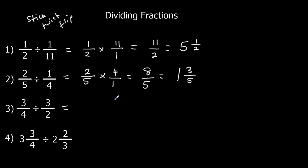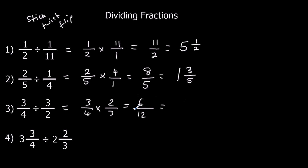3 quarters divided by 2 thirds — flip to 3 quarters times 3 over 2. 2 times 3 is 6, and 4 times 3 is 12. They're both in the 6 times table — 1 six and 2 sixes — the same as a half.